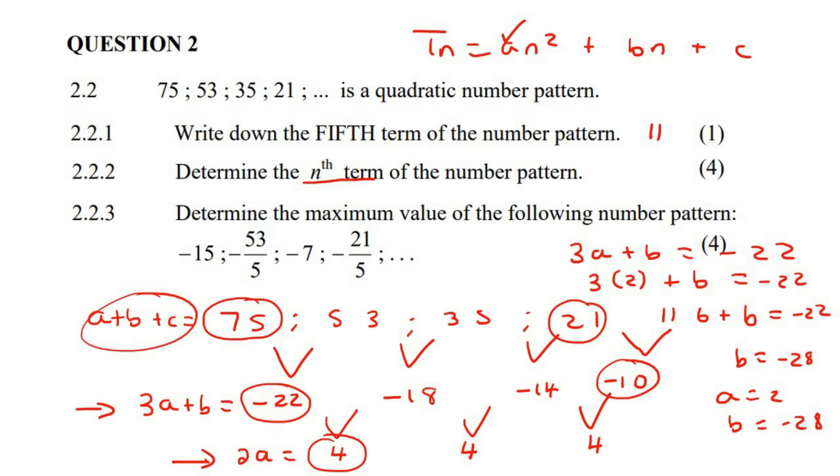So we have A as 2 and B as negative 28. Then you choose this one, so that's A plus B plus C equals to 75. So A we know as 2, B we know as 28, and then C we can calculate. And so if you had to calculate C, you should eventually get 101. So if we then go for everything in, we end up with Tn equals to 2n squared minus 28n plus 101.